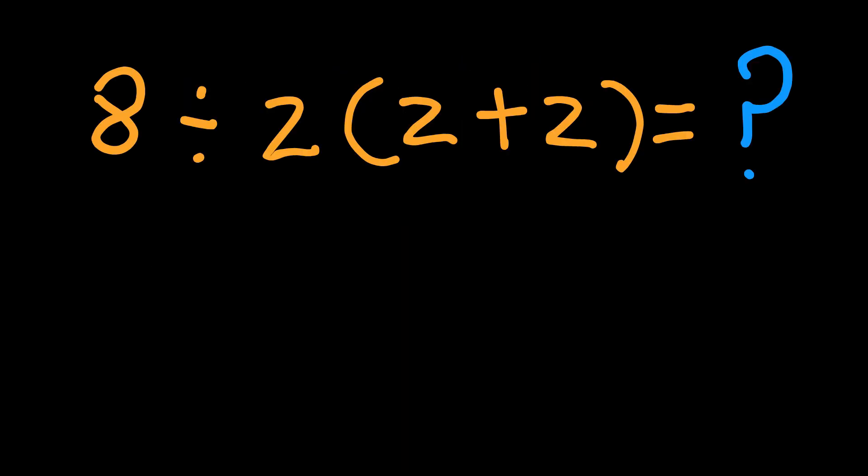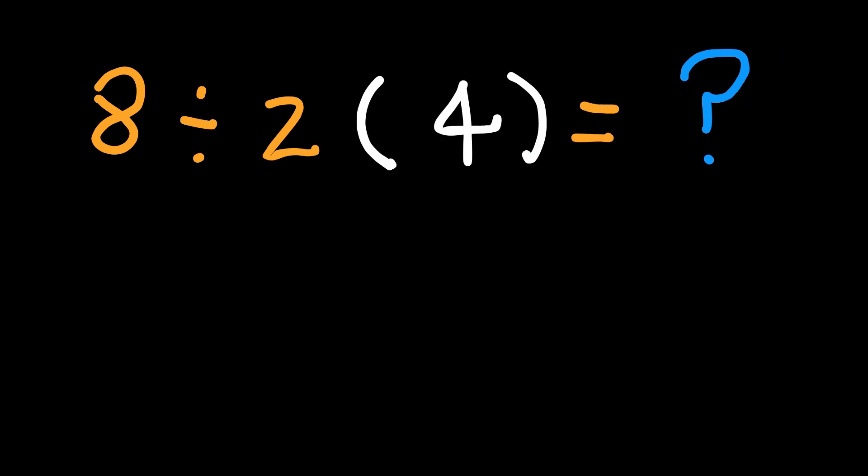So, let's go back to our problem. 8 divided by 2, open brackets, 2 plus 2, close brackets. Before we solve, let's rewrite this in a more expanded way. First, solve the parenthesis. 2 plus 2 equal 4. Now, we have 8 divided by 2 and 4. Now, pause.